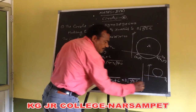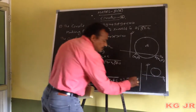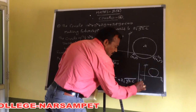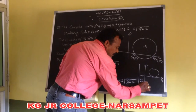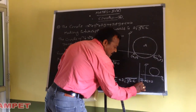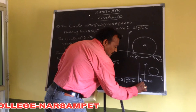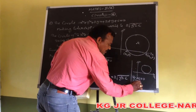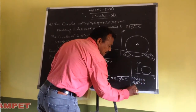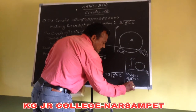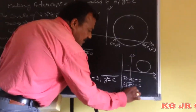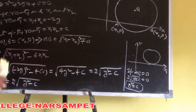This is the condition: if AB equals 0, that means 2 into root of g square minus c equals 0, which means g square is equal to c. This is the condition for the circle to touch the x-axis.